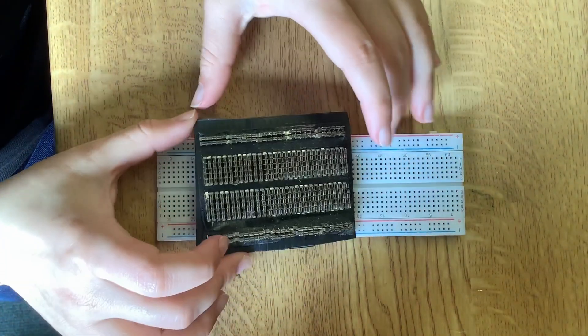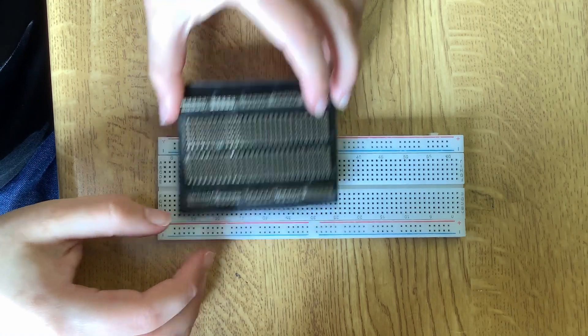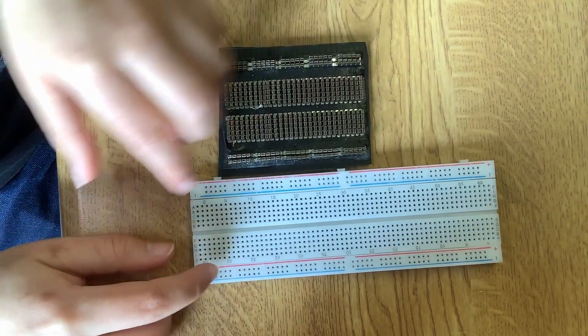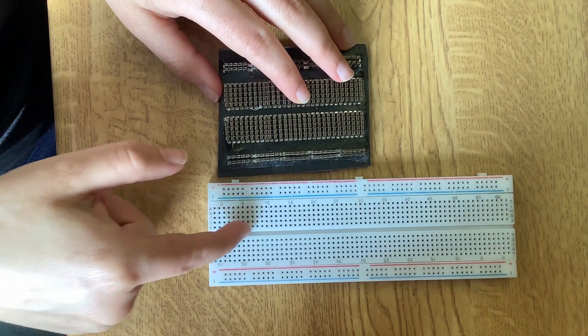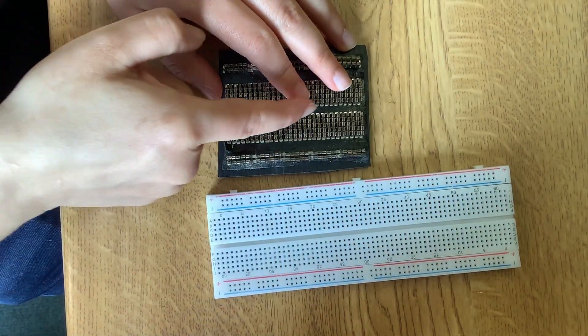A breadboard on the inside looks like this, so as you can see here the dots in the center are connected vertically and there's a gap here that means that they're not connected.